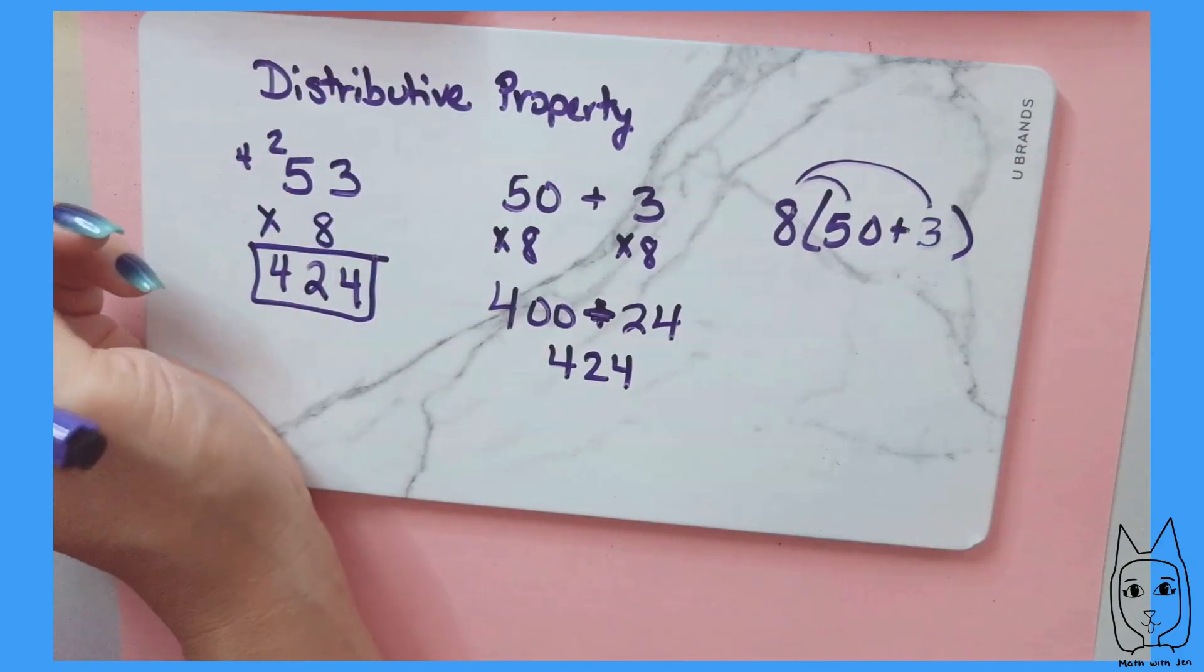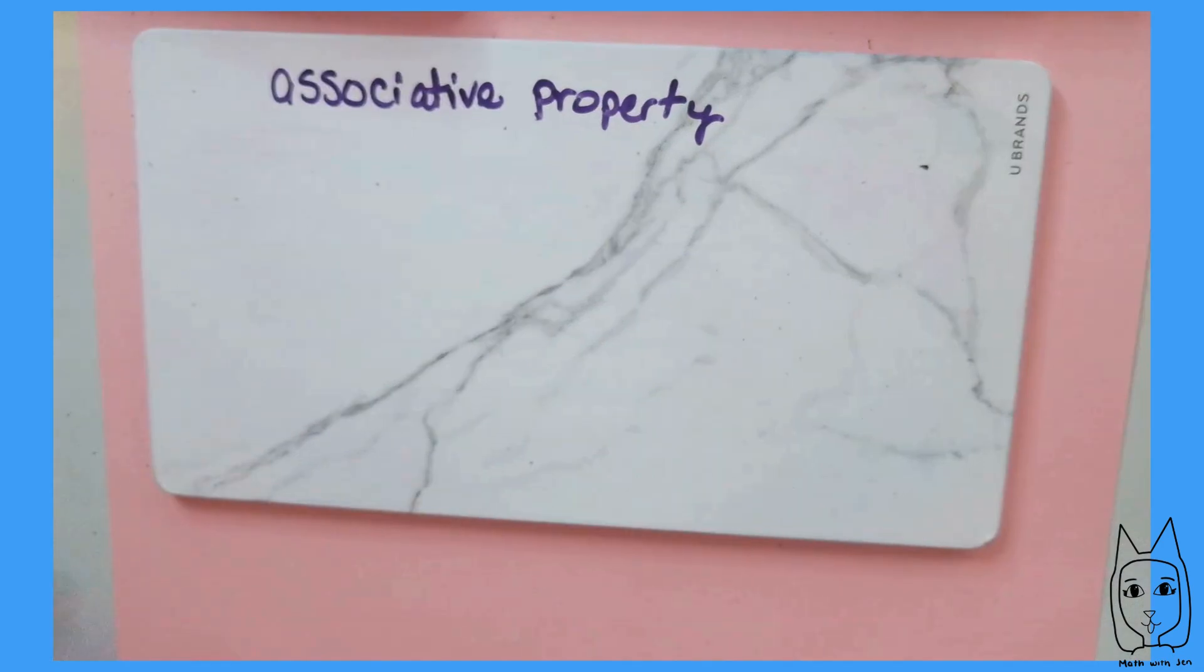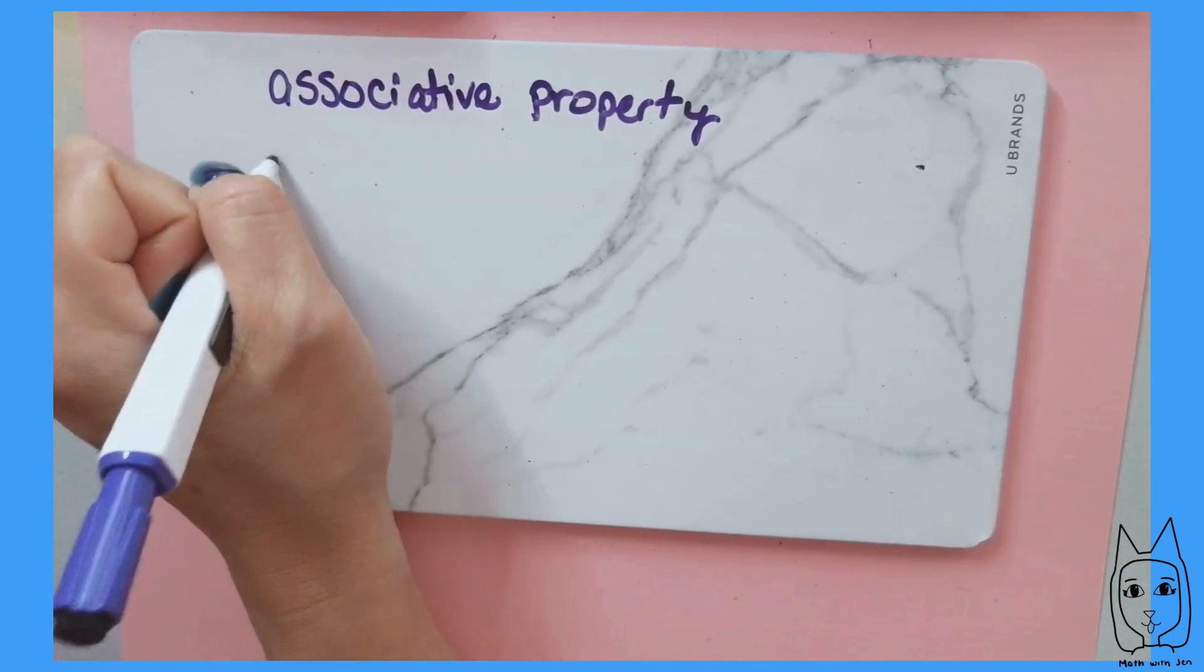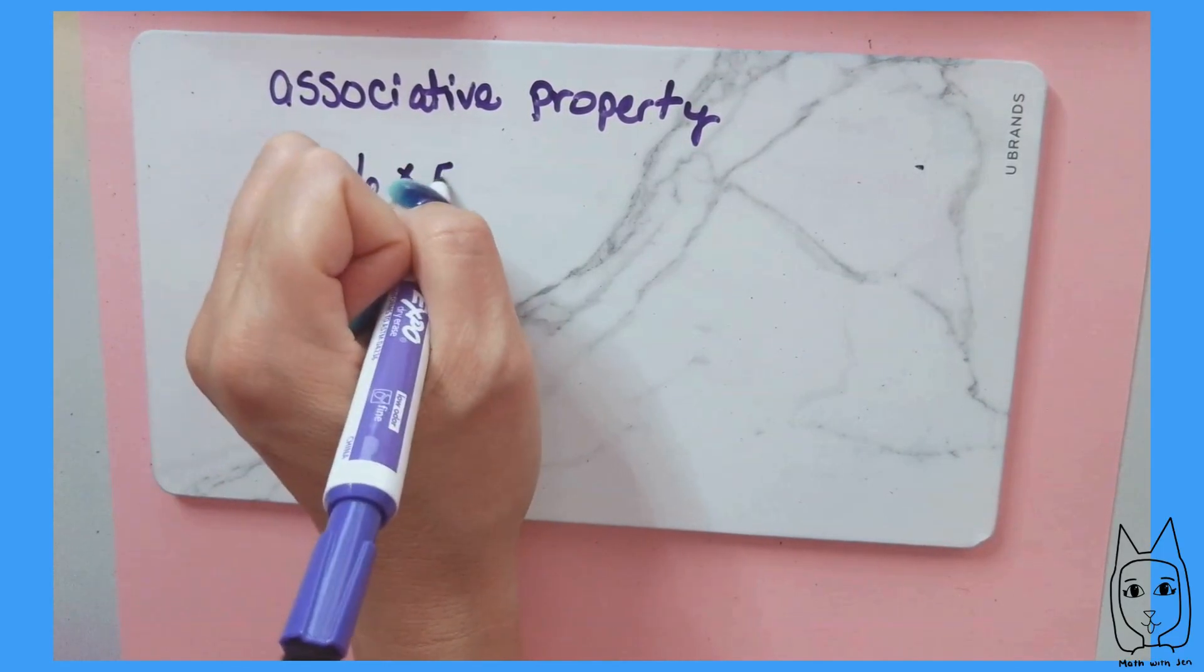Associative property just means that you can multiply in any order that you want and you can get the same answer. Let's say you were given the problem 4 times 6 times 5.